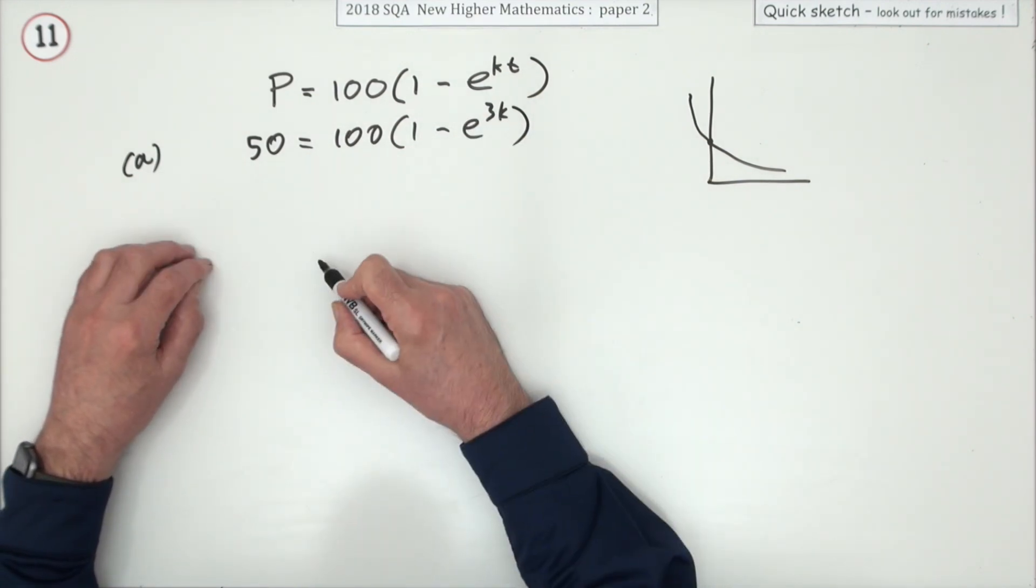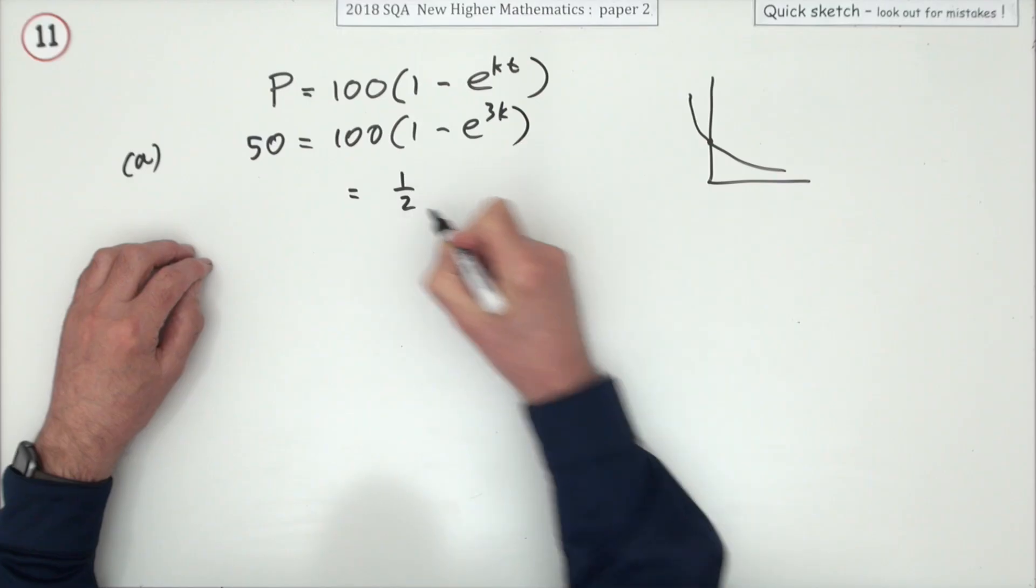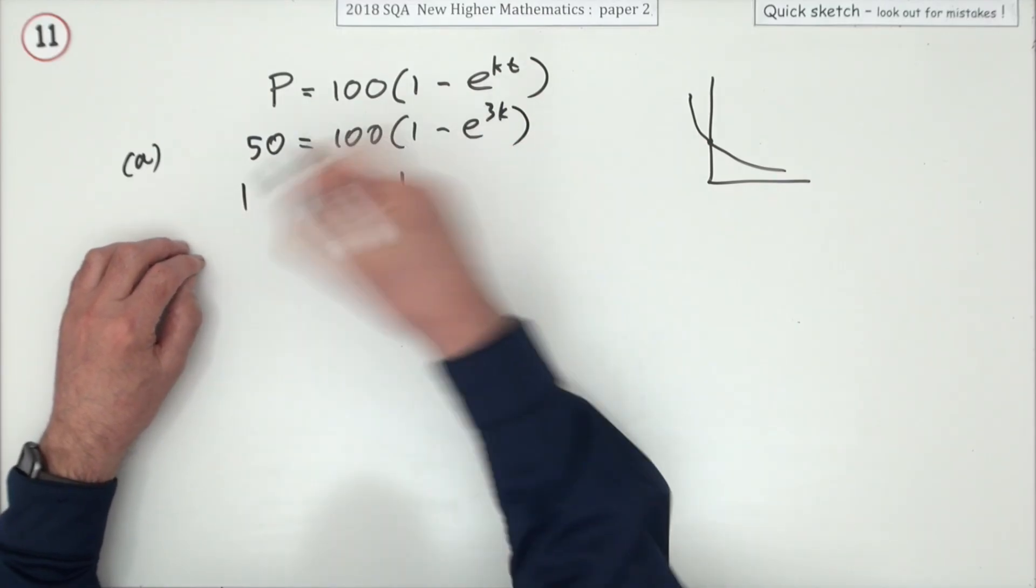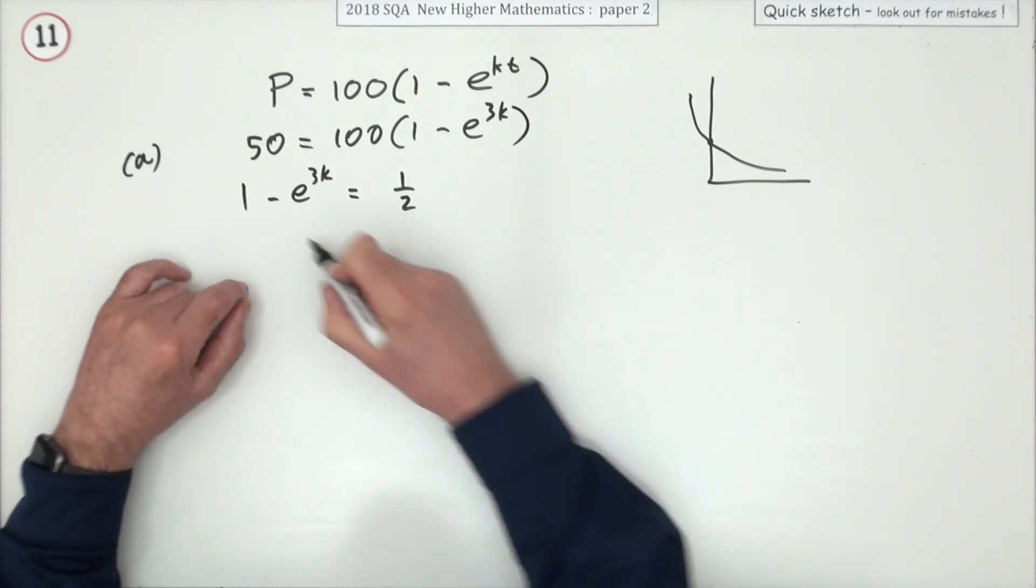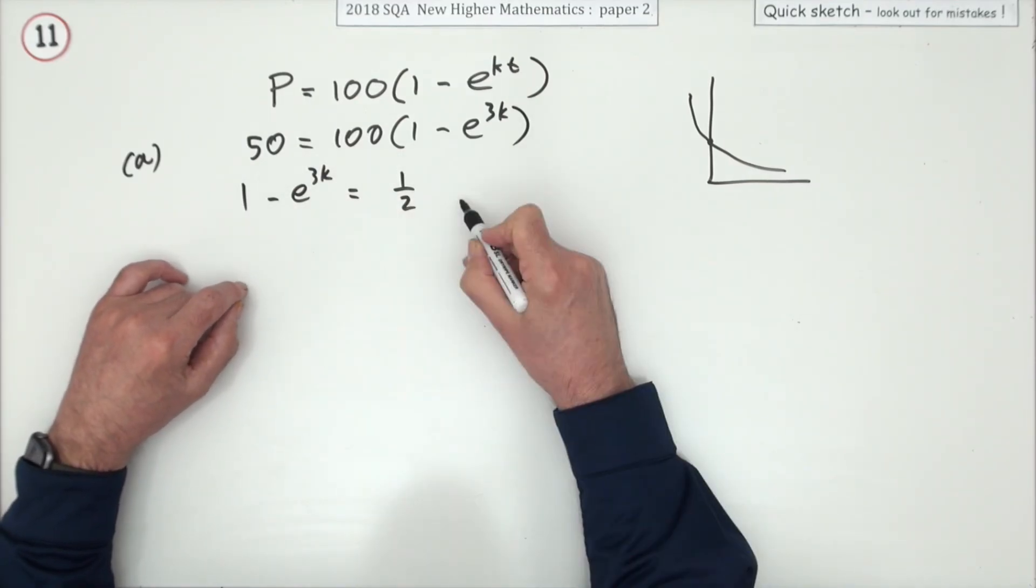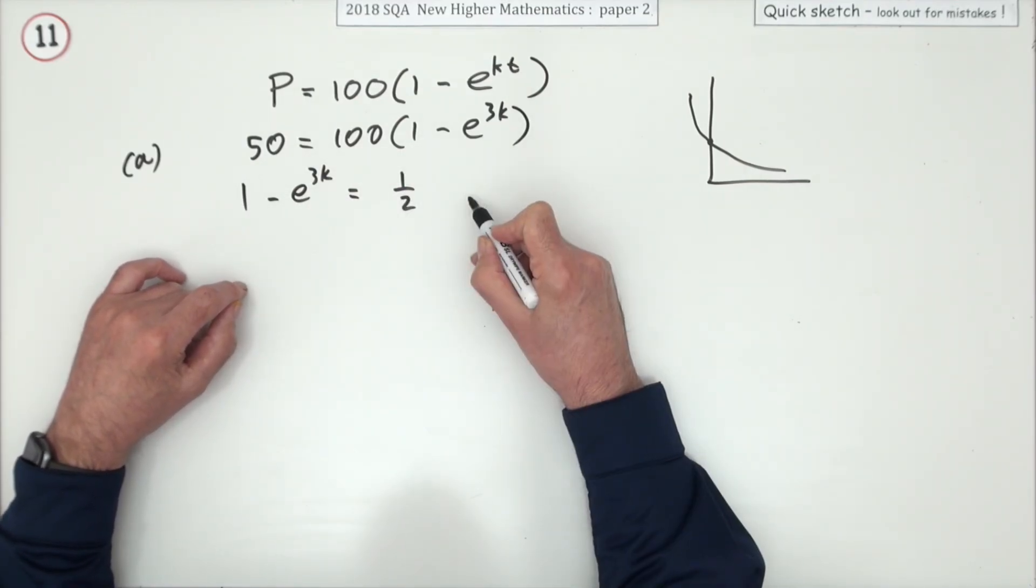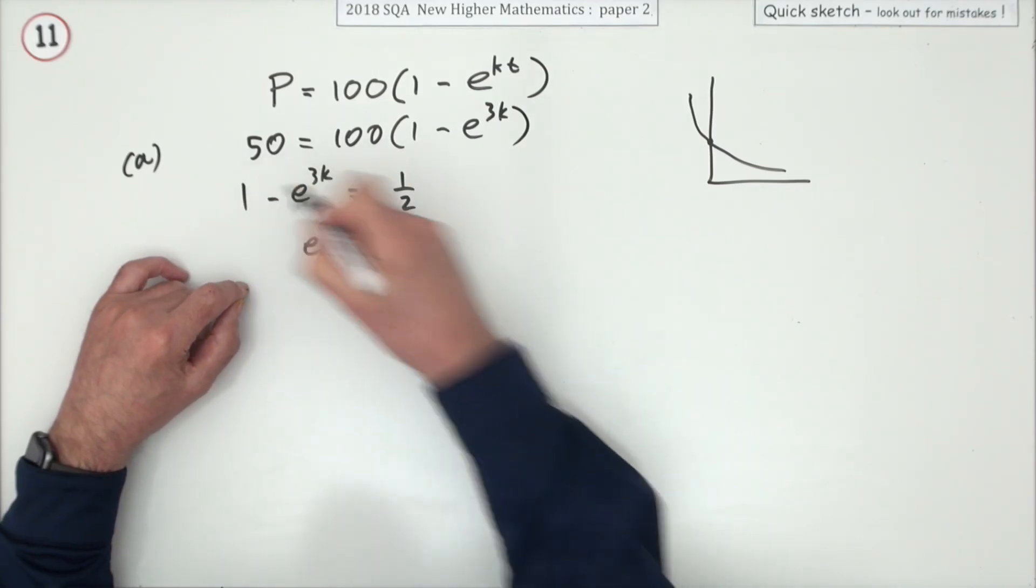That means you've got 50 over 100 is a half, so 1 minus e^3k must equal a half. Right, I'm going to take it back again. Take the 1 over, subtract, so e^3k equals a half.